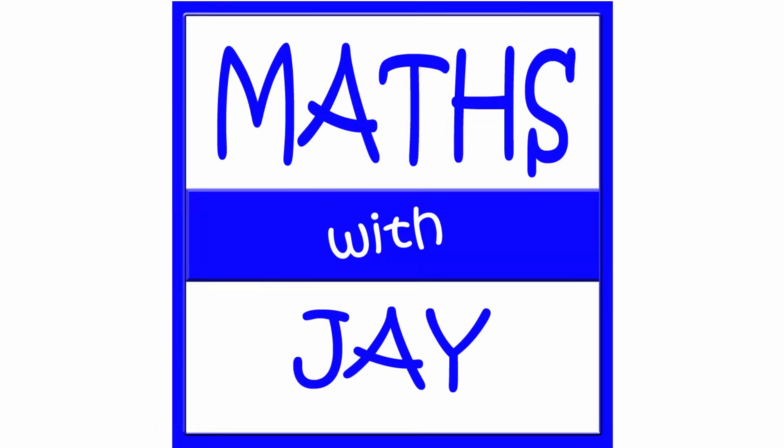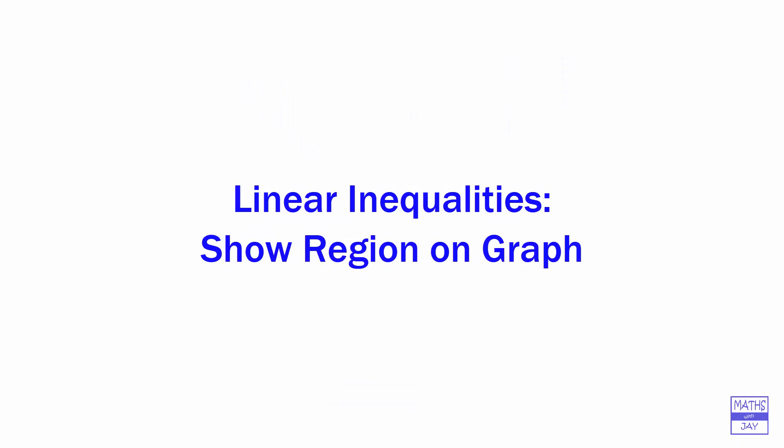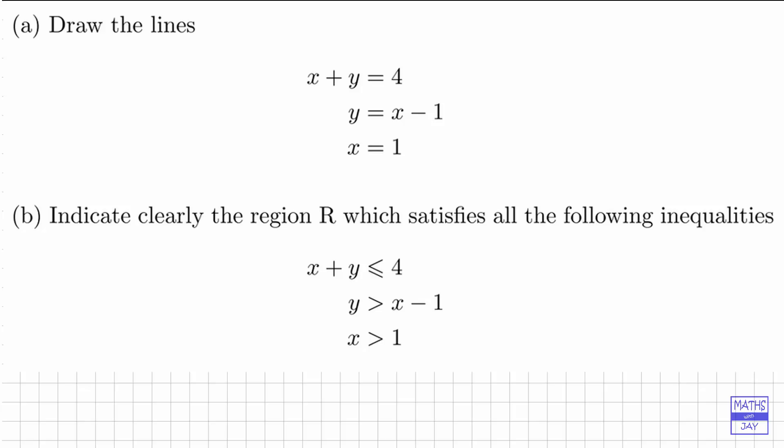Hello, welcome to Maths with Jay. Here we're going to start off by drawing three straight lines in part A, and then in part B we're going to use those straight lines to indicate a region that satisfies three inequalities.